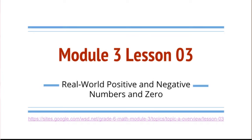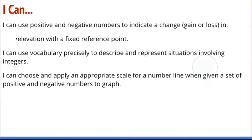Module 3, Lesson 3: Real-world positive and negative numbers and zero. Today we're going to focus on elevation with a fixed reference point instead of looking at temperature and bank accounts. I can use positive and negative numbers to indicate a change, a gain or a loss, in elevation with a fixed reference point. I can use vocabulary precisely to describe and represent situations involving integers. I can choose and apply an appropriate scale for a number line when given a set of positive and negative numbers to graph.